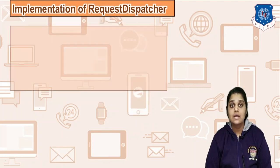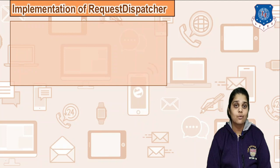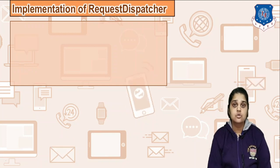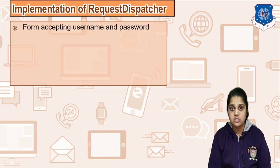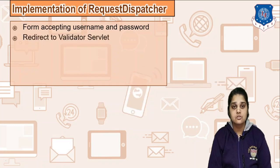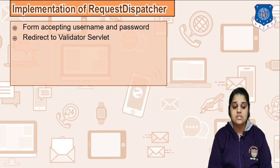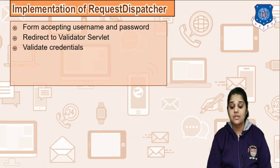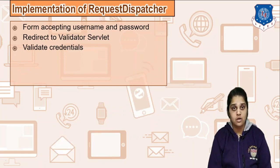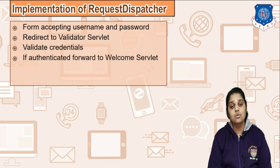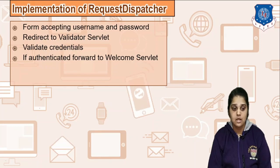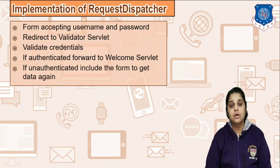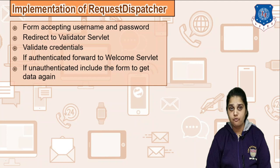Now let's see how we are going to implement using RequestDispatcher. We are going to create a form accepting username and password. After creating this form, we will redirect the values to a validator servlet. This validator servlet validates the credentials — if they are correct, it will redirect the authenticated request to a welcome servlet. If unauthenticated, the request will be handed back to the login form.